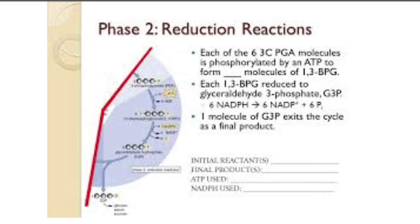Next, reduction happens. ATP and NADPH are used to convert the 3-PGA molecule into molecules of a 3-carbon sugar, which is G3P. This is called reduction because NADPH donates electrons to, or reduces, a 3-carbon intermediate to make G3P.